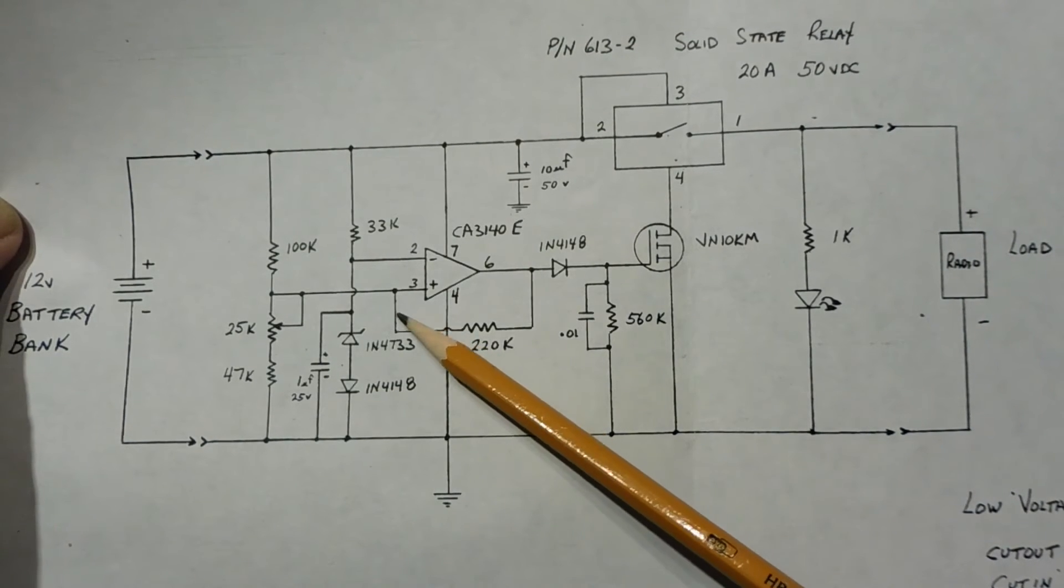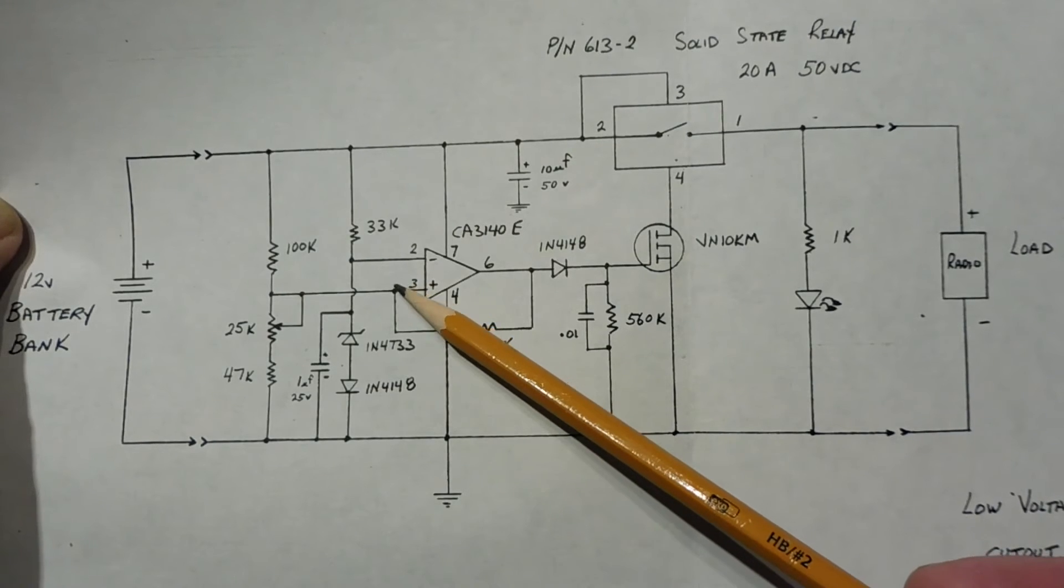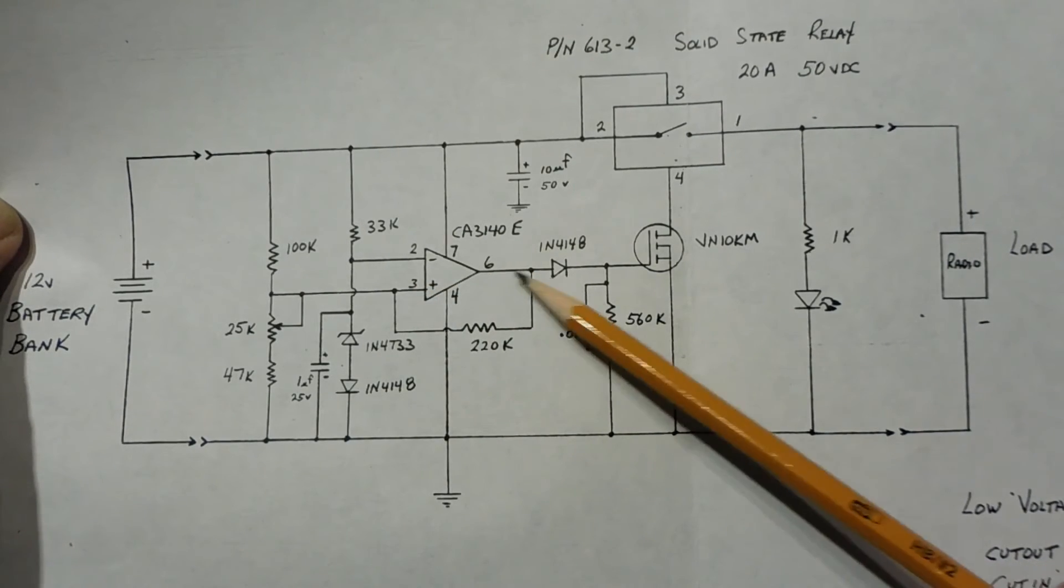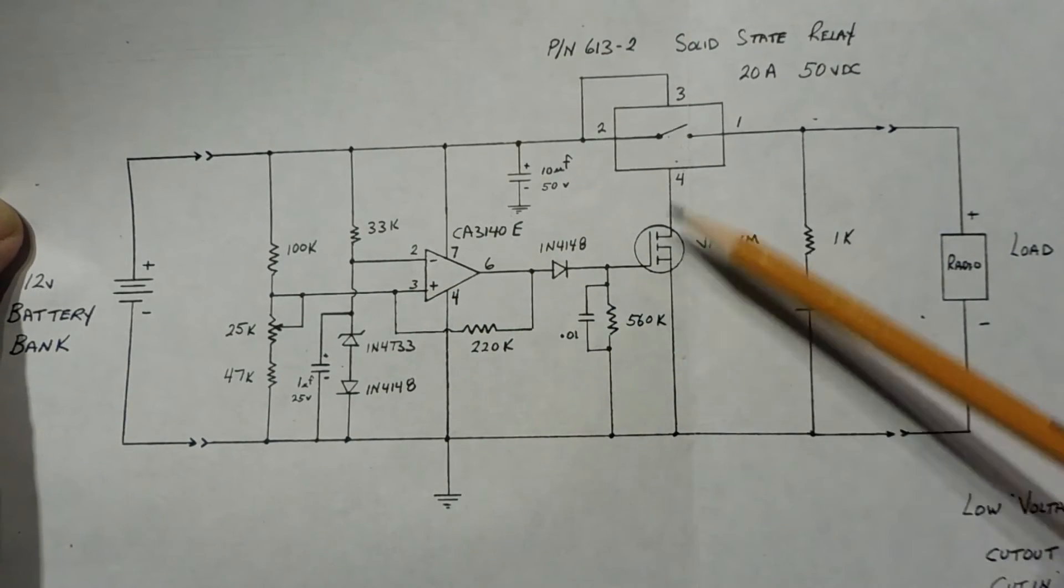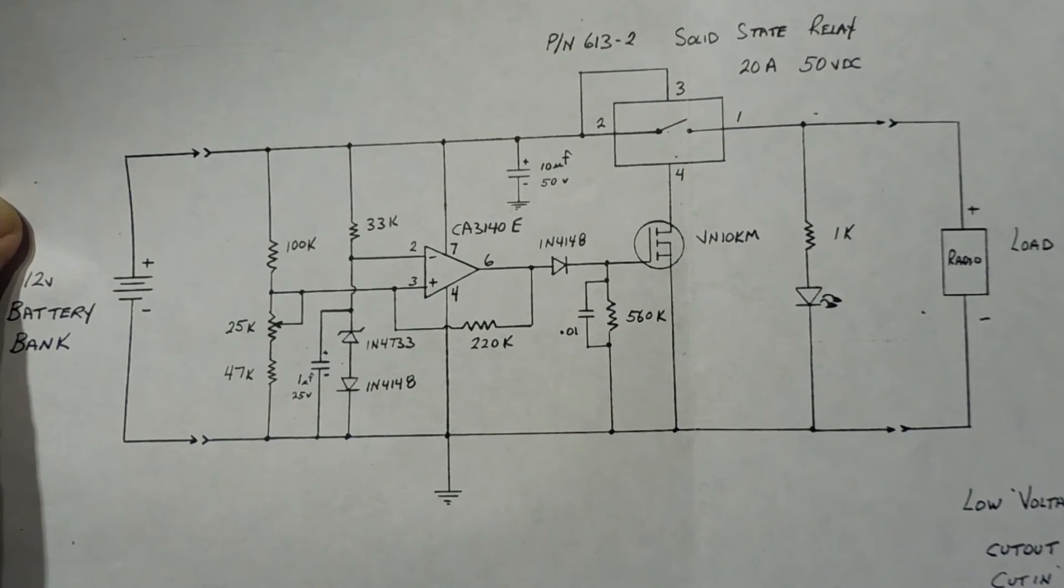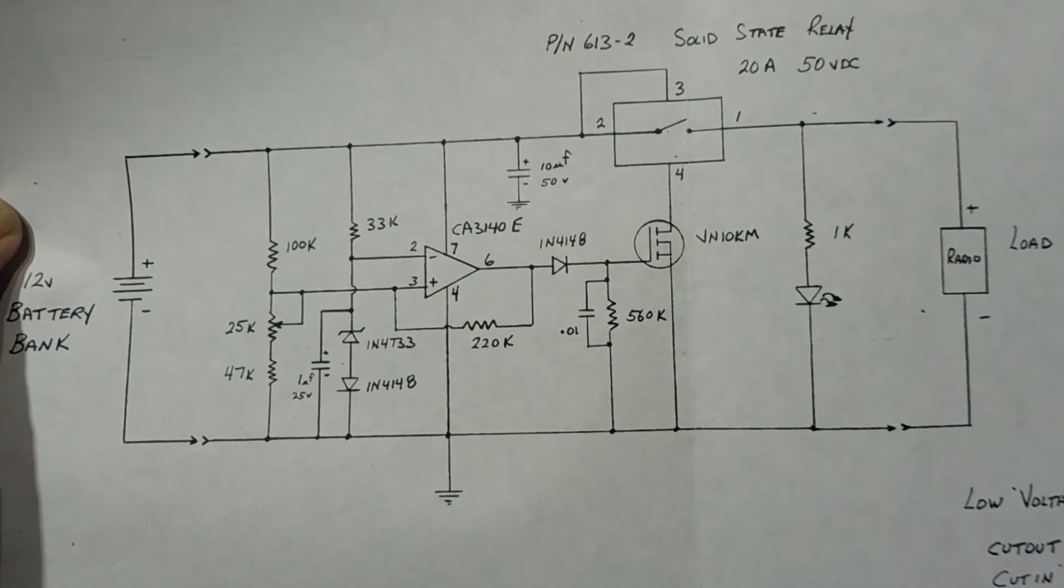Now when the voltage drops below 10 volts, now the voltage on pin 2 will be higher than the voltage on pin 3, and pin 6 will go low and shut off the MOSFET transistor, which will shut off the relay. So that's basically how our circuit works.